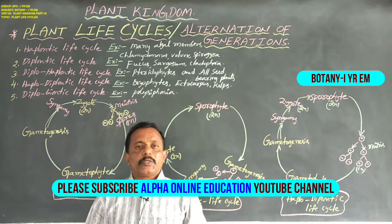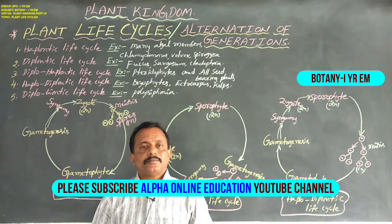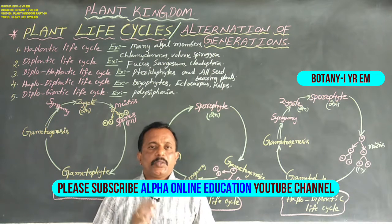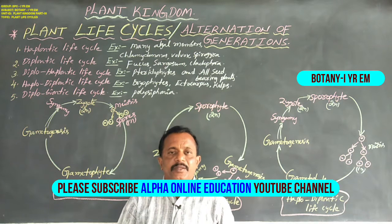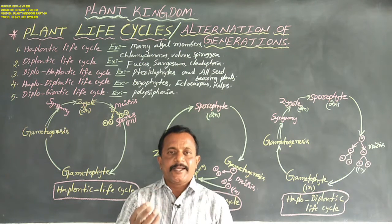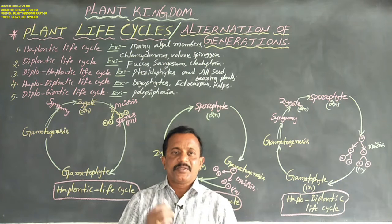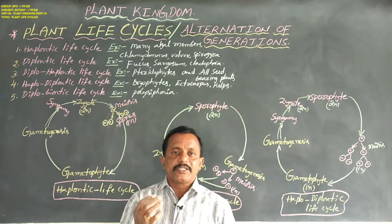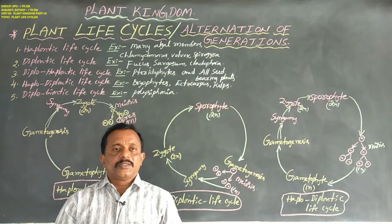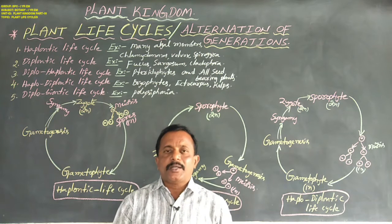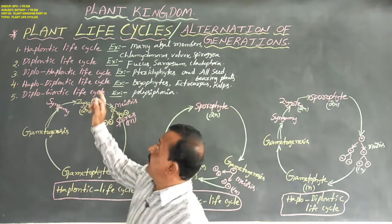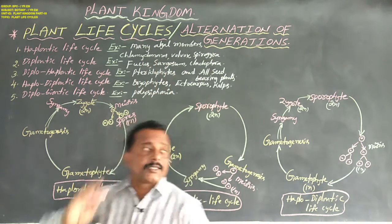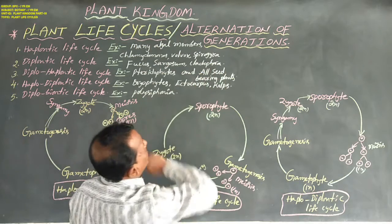Dear students, good morning to one and all. In plant kingdom, we have totally completed characteristics in algae, characteristics in bryophytes, characteristics in pteridophytes, characteristics in gymnosperms and characteristics in angiosperms. Today we are going to discuss about the last topic in plant kingdom, that is plant life cycles and alternation of generations.